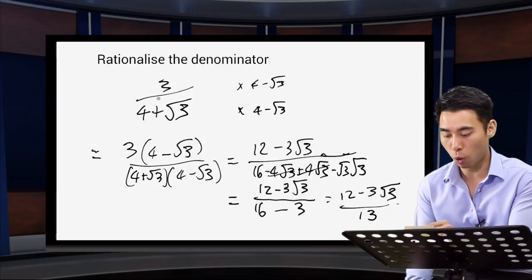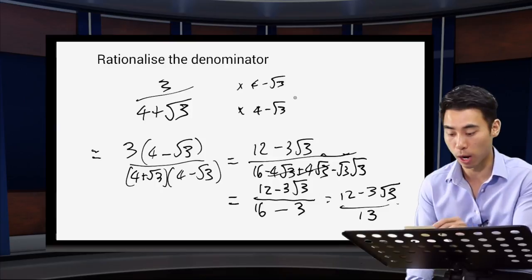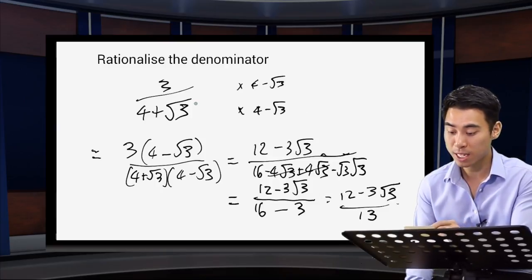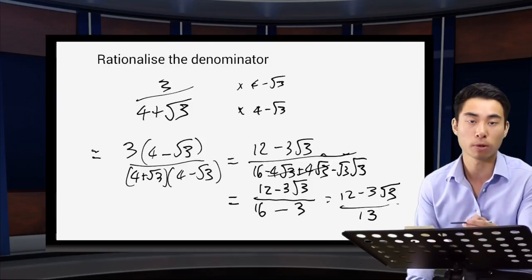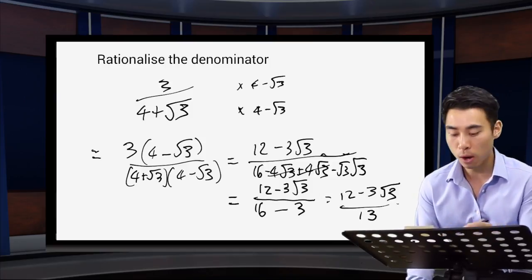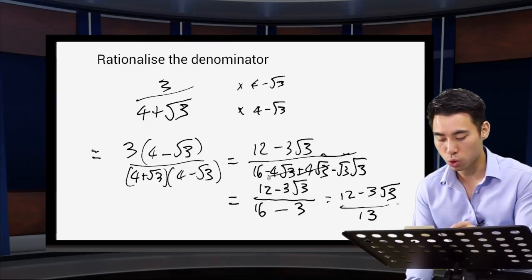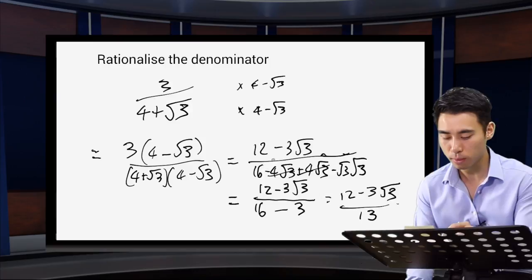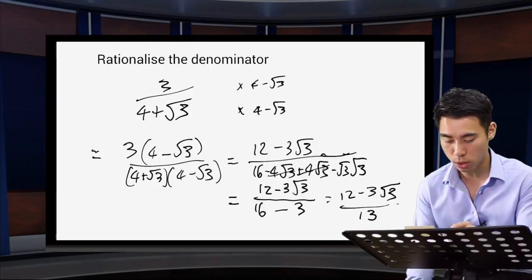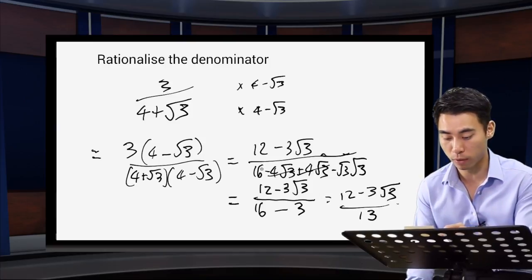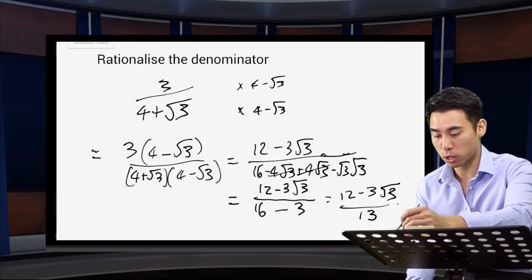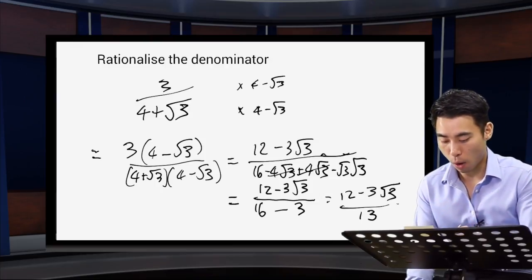How did we do that? We had 4 plus root 3 on the bottom, so we multiplied by 4 minus root 3. Similarly, if we had 4 minus root 3 on the bottom, we'd multiply by 4 plus root 3. This works because the two middle terms always cancel, and two of the same surds multiplied together just give a number. So the denominator of the fraction will be a rational number rather than a surd.